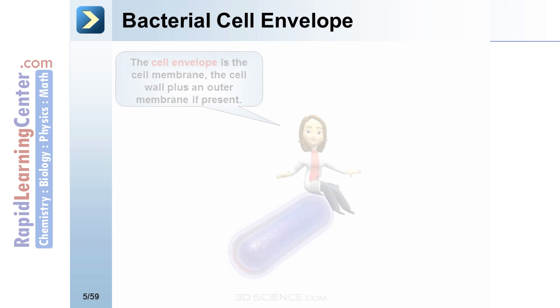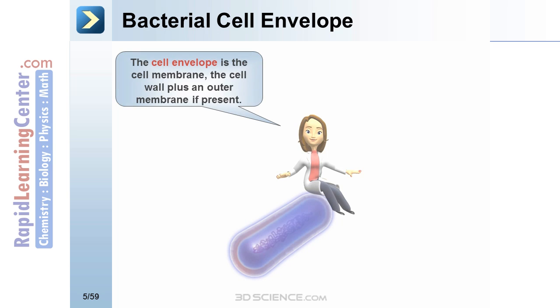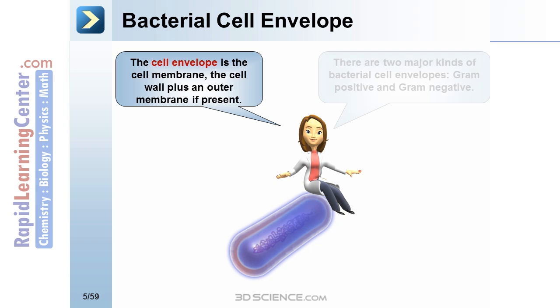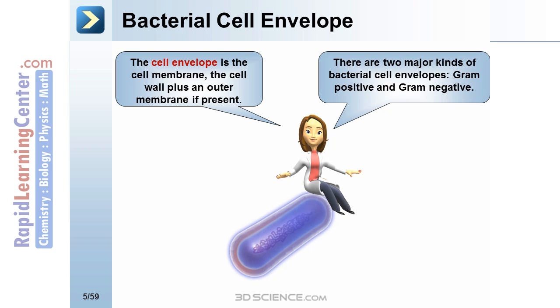Bacterial cell envelope. The cell envelope is the cell membrane, the cell wall, plus an outer membrane if present. Bacterial cell envelopes are of two types: gram-positive and gram-negative.